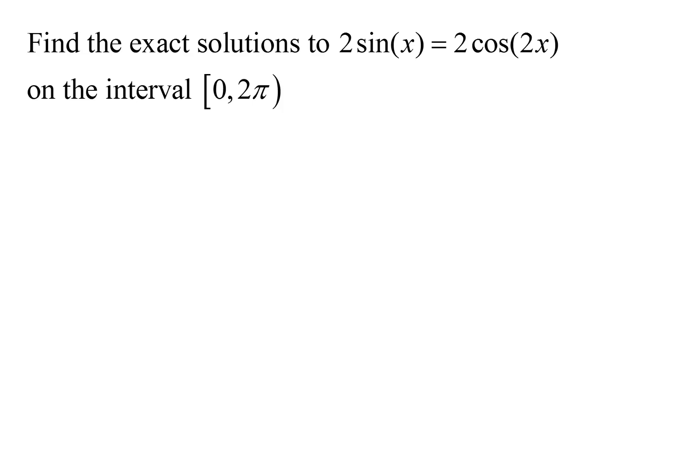Well, the first thing I notice is that the arguments, or the angles, I have an x and I have a 2x. And so I want to use an identity so that I can get them in terms of the same angle.